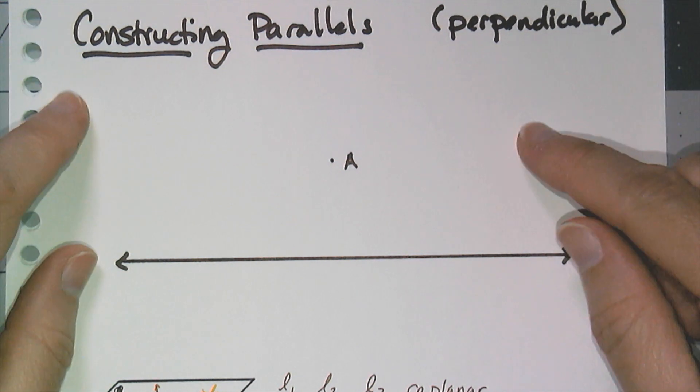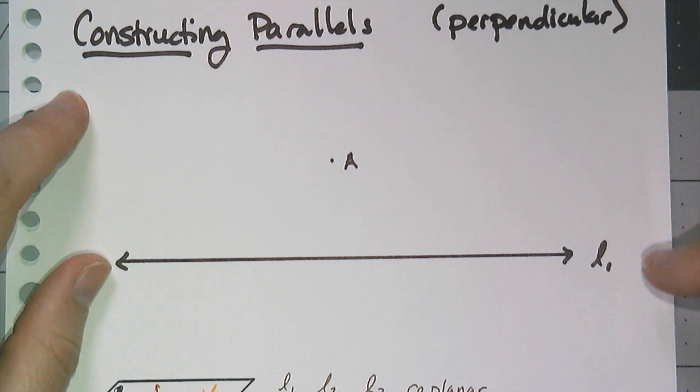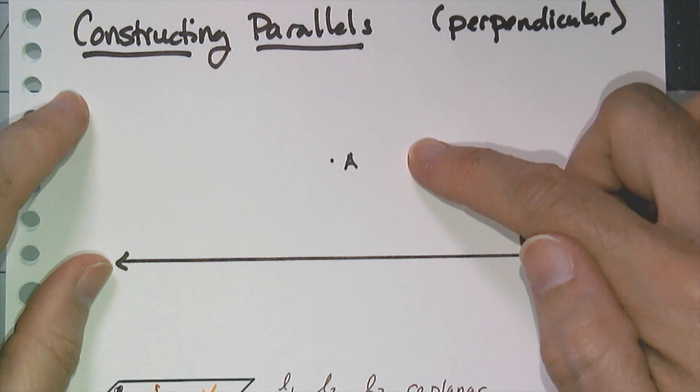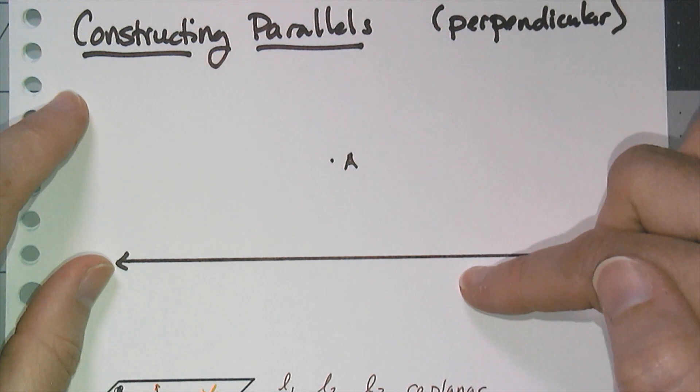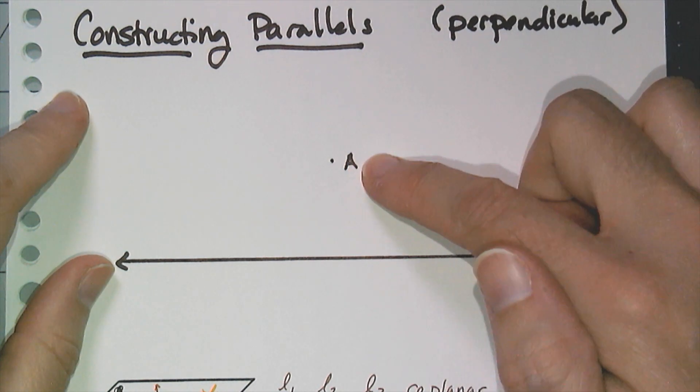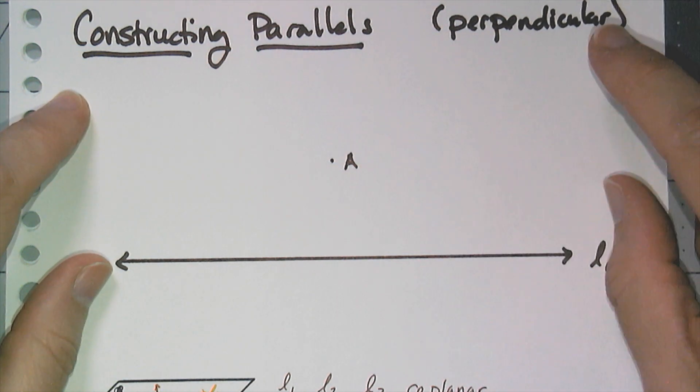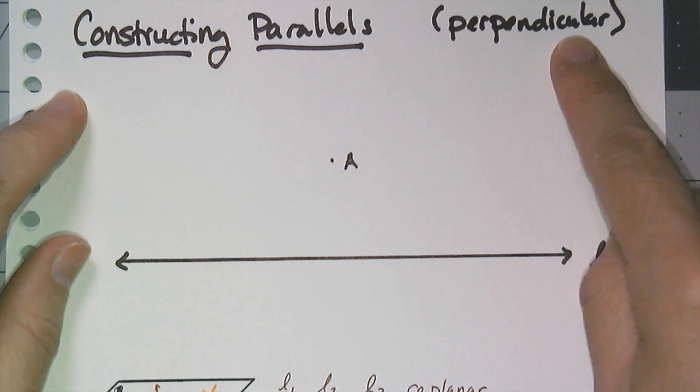Specifically, we're going to look at how to construct parallel lines. In the scenario where I'm given a line and a point not on the line, and I want to construct the line that is parallel to the original line that specifically goes through point A. And the math facts and constructions I'm going to use in this construction have to deal with things that are perpendicular.